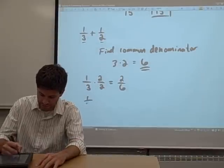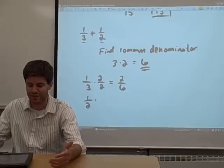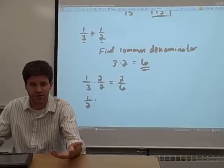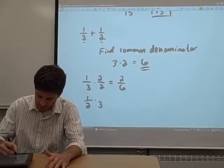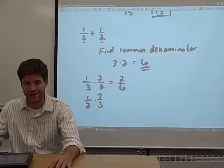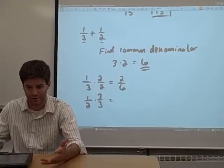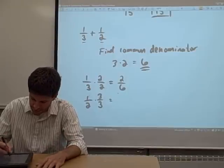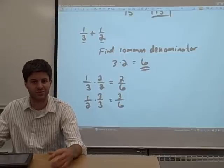Then we look at one-half. The question is, how can we get one-half to have a denominator of six? And the way that we found the six in the first place is we multiply it by three. So to get one-half converted into a fraction that has a denominator of six, we multiply it by three over three. Multiply straight across and you get that one-half equals three-sixths.